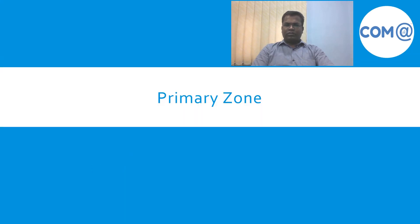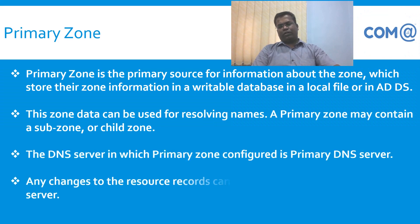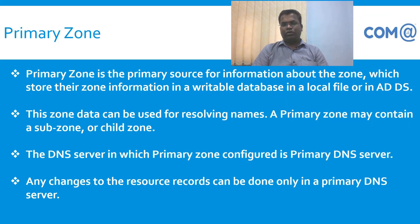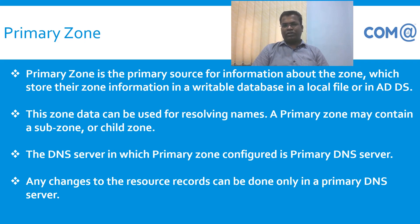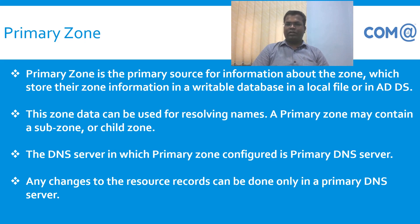First we will discuss the primary zone. The primary zone is the primary source of information. When configured on a server, that server becomes the primary DNS server. The primary DNS server is the source of records — it stores the master copy. You can create and modify records on the primary DNS server, and all changes are stored in the primary zone.